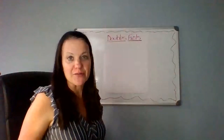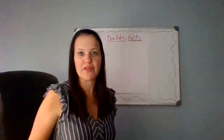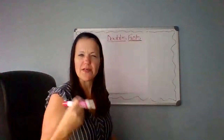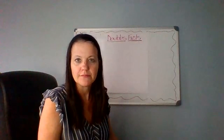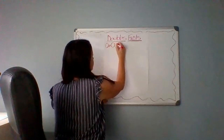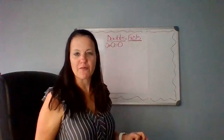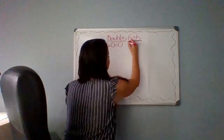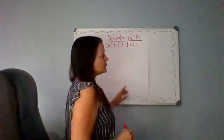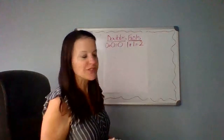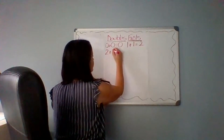Boys and girls, now we're going to build our anchor chart together — we're going to write down our doubles facts. I'm going to start with the number zero. Zero plus zero — what do you think the sum will be? My sum is going to be zero. Now I'll try one: one plus one equals two. Now I'm going to use two: two plus two, and I'll use another two as an addend.